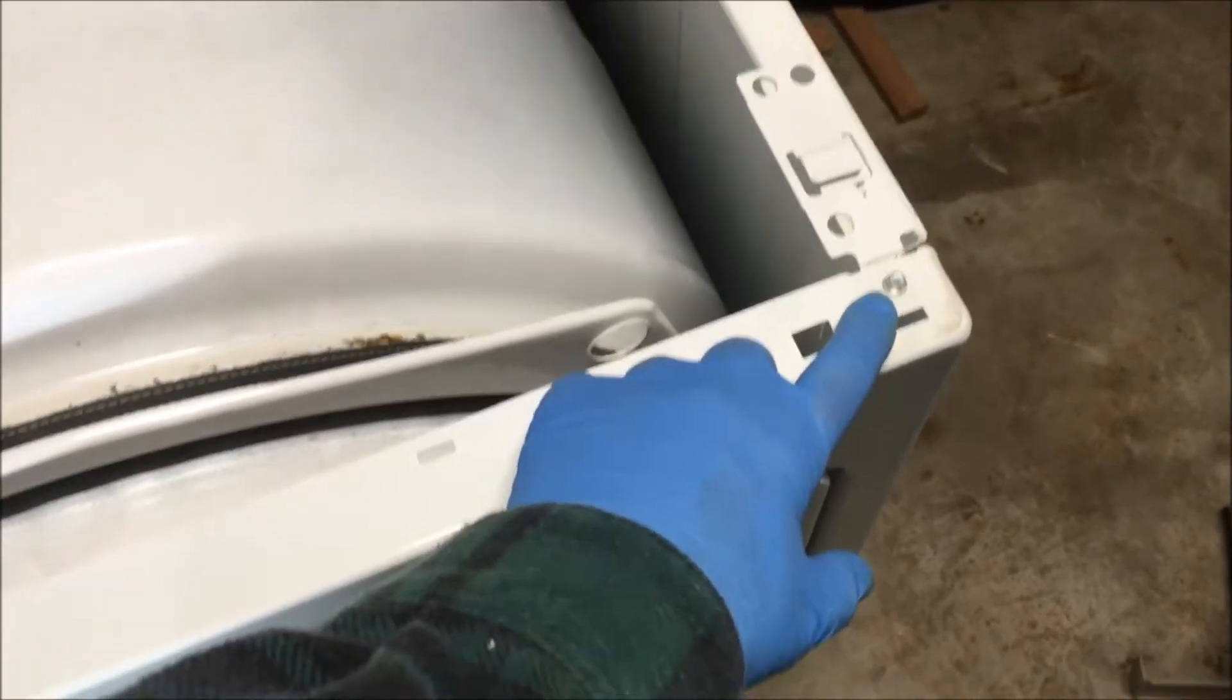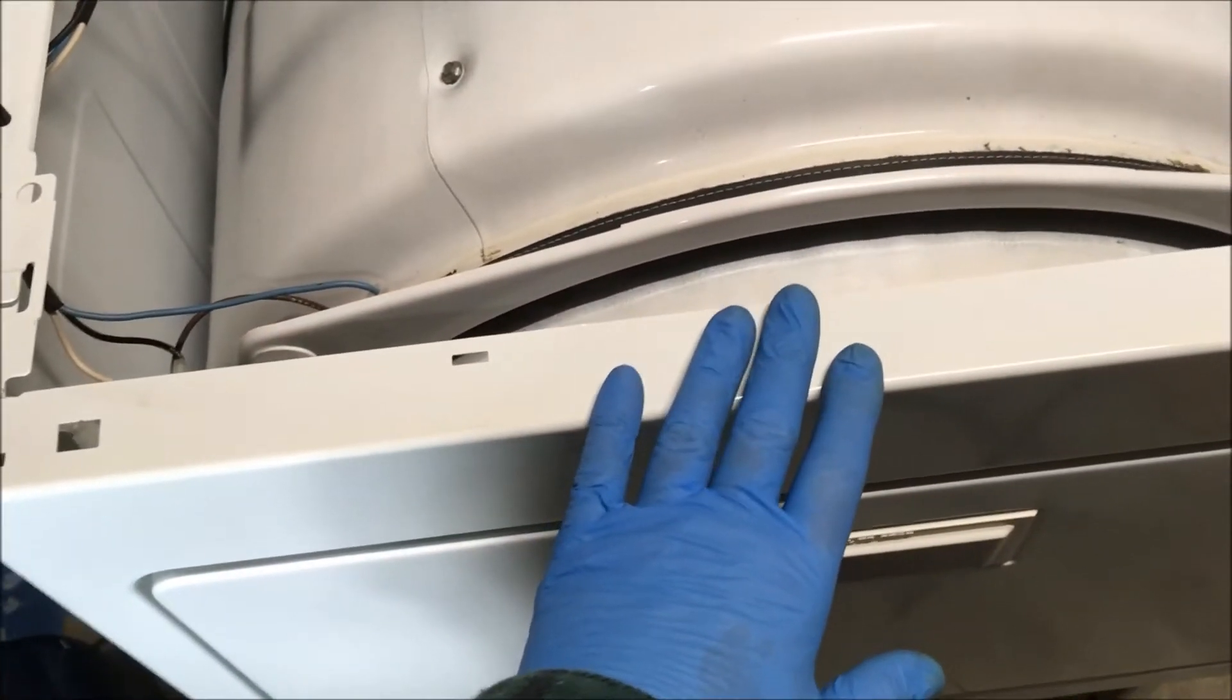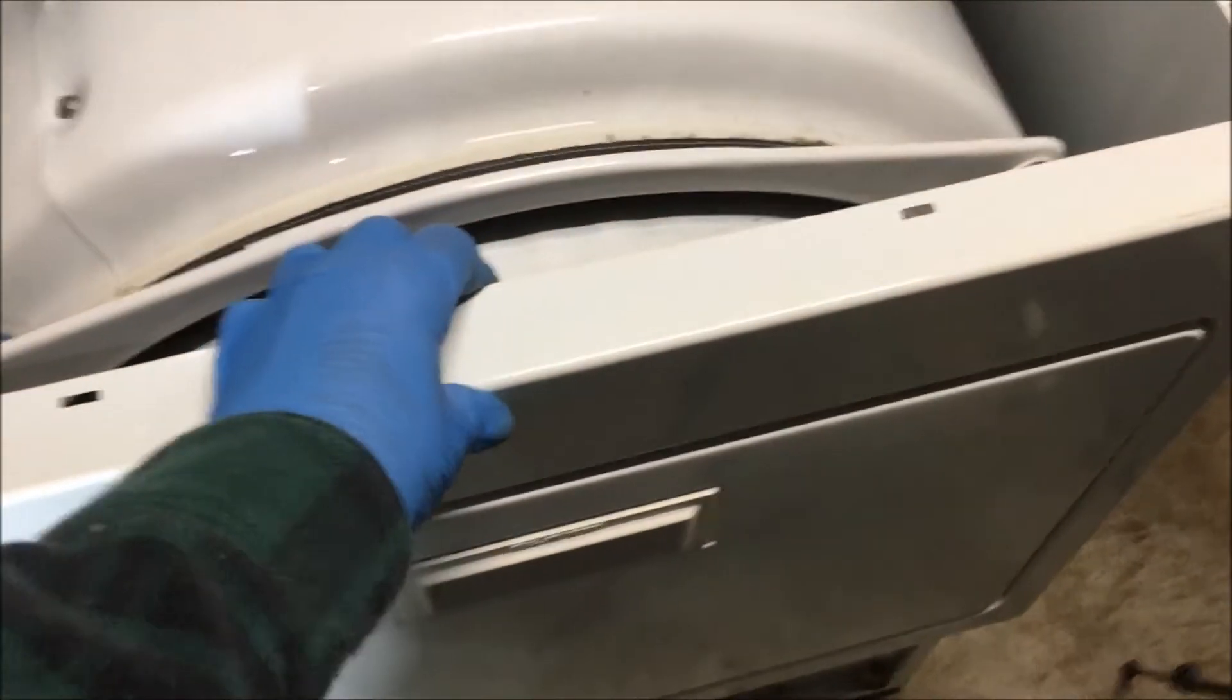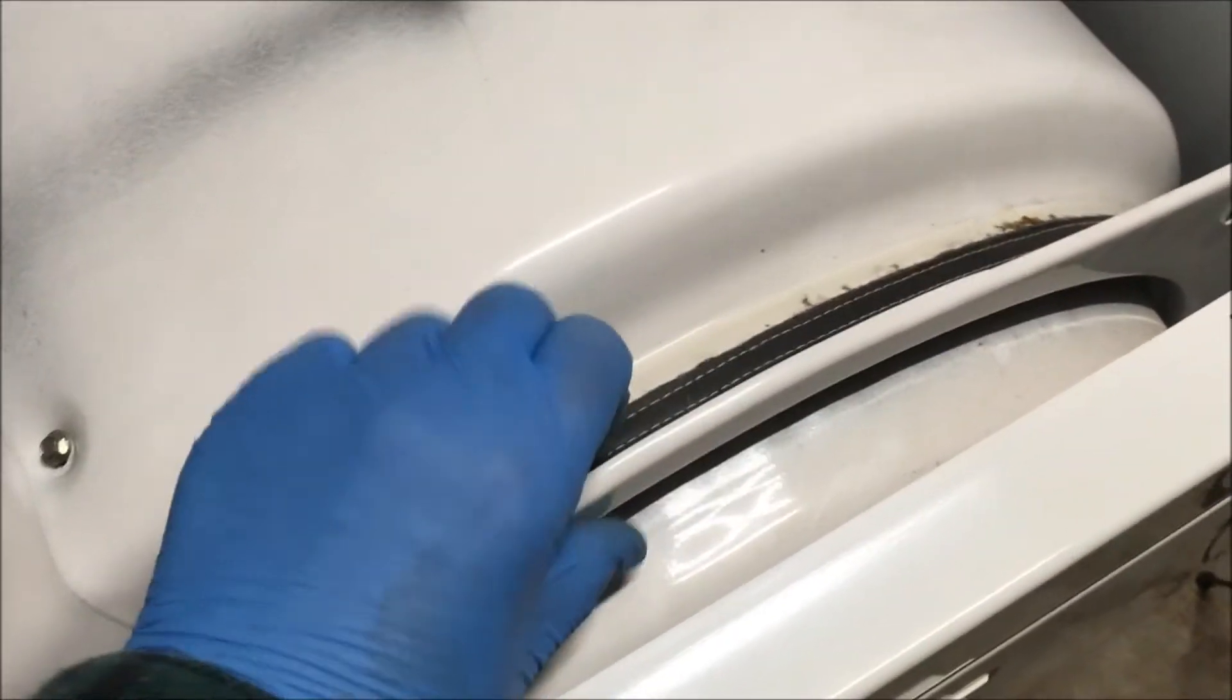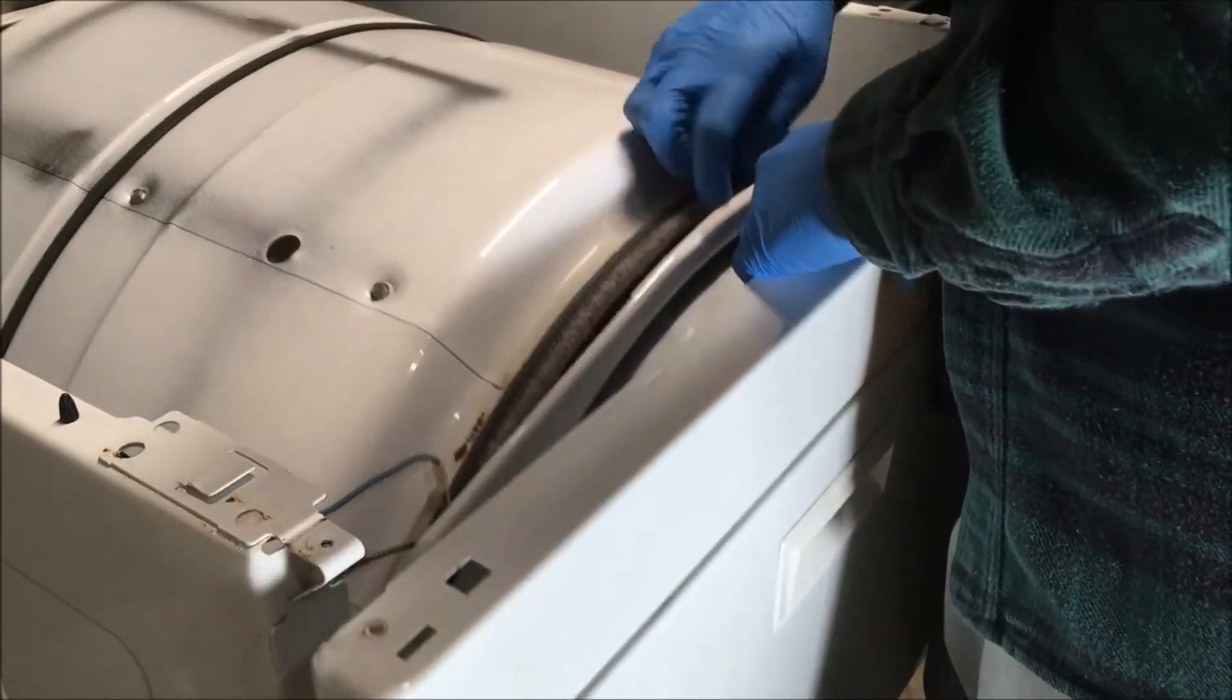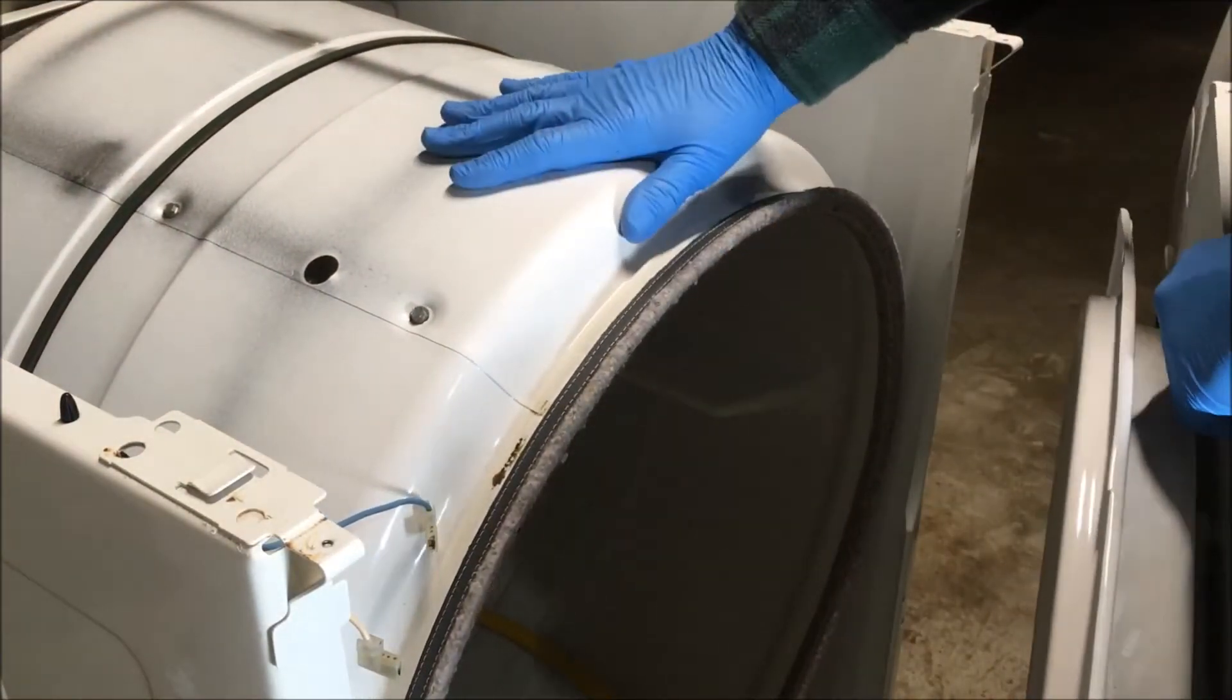Now you have two screws to remove from the top panel. One here and one here. And then we're going to lift this panel off. When you lift up on this panel to remove it or pull it forward, this drum is going to want to sink down. So you want to lift up on that drum a little bit to remove this panel. Then you can just rest the drum.